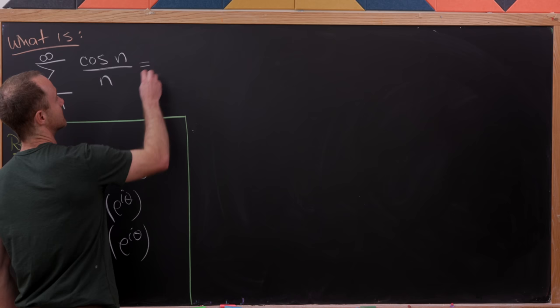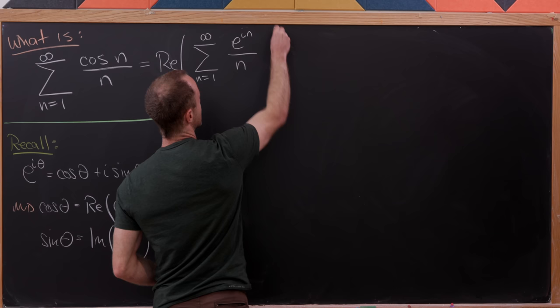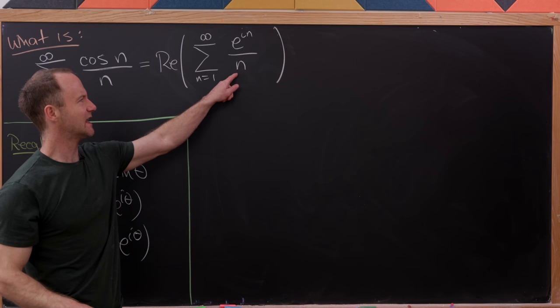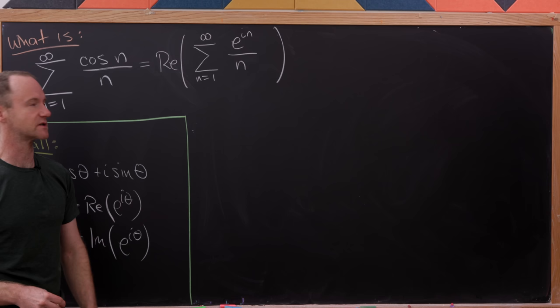So our sum will be equal to the real part of the sum as n goes from one to infinity of e to the i times n, over n. This n in the denominator coupled with the n in the exponent looks like we've taken an integral or anti-derivative and divided by the multiplying constant — that's exactly what it looks like is going on here.